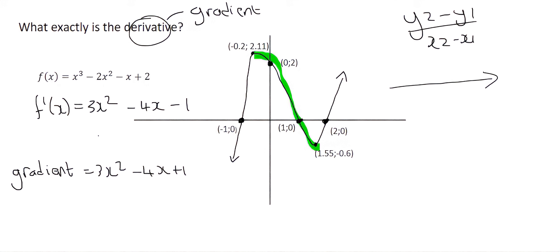What that means is that the gradient is negative. Let's see if that is true. So I want you to choose an x value somewhere between this endpoint and this endpoint. So the x value at this endpoint is negative 0.2, and on this side, it's 1.55.